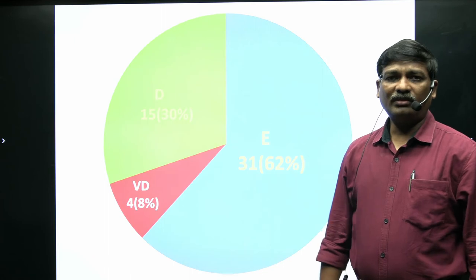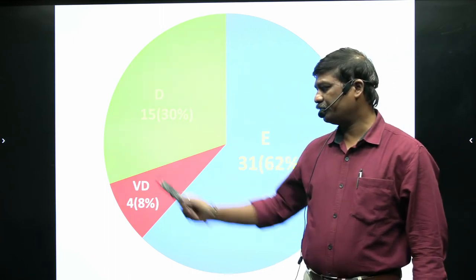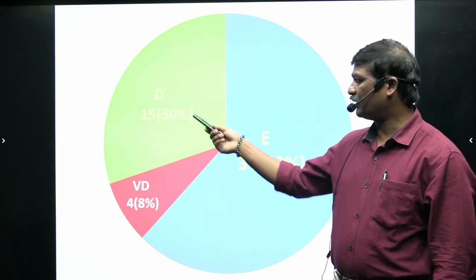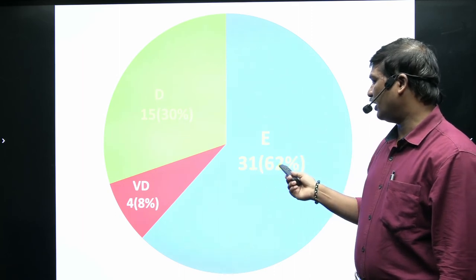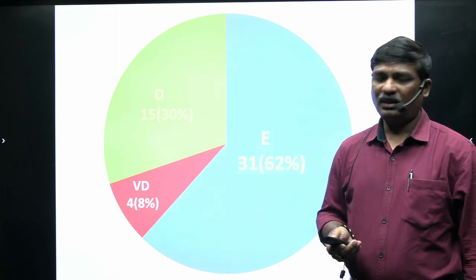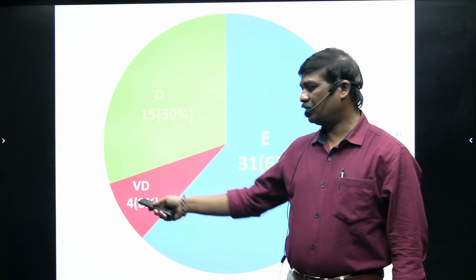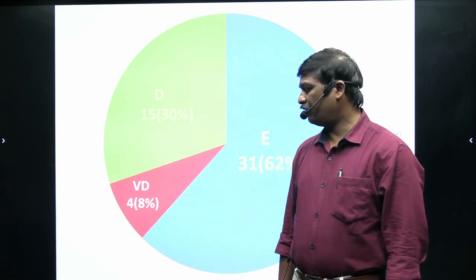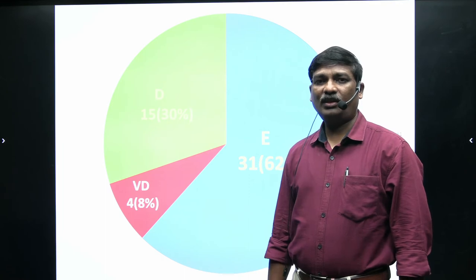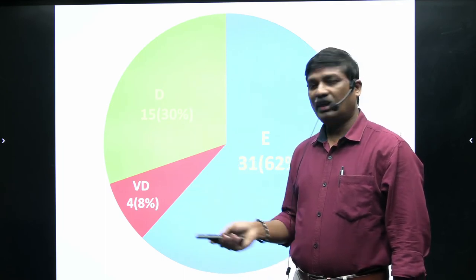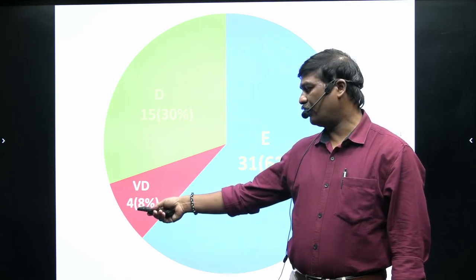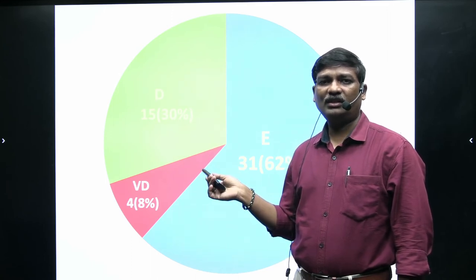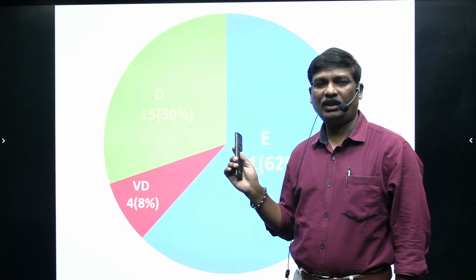In the overall analysis of 50 questions: 4 questions are very difficult (8%), 15 questions are difficult to moderate (30%), and 31 questions are very easy (62%). Of the 4 very difficult questions, 2 are in Section B (where we have choice) and 2 are in Section A (no choice). So out of 45 questions in Section A, only 2 are difficult — meaning 43 questions are easily answerable. Overall, the paper is easy to moderate with no ambiguous questions.